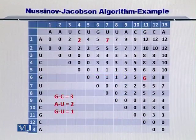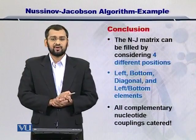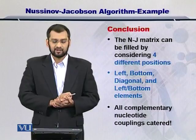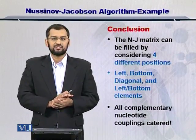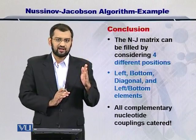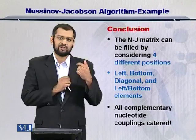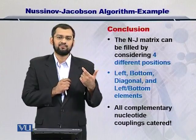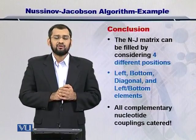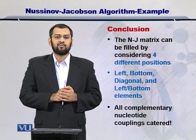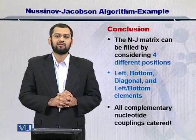Once you have filled up the entire matrix, you are ready for the next step. To summarize the filling of the matrix, you need to consider four different positions: the position at the left, the position at the bottom, the position in the diagonal, as well as the rows beyond the bottom and the left elements. In this way, you can cater for all possible nucleotide couplings and arrive at the scoring matrix.